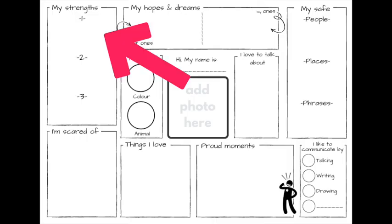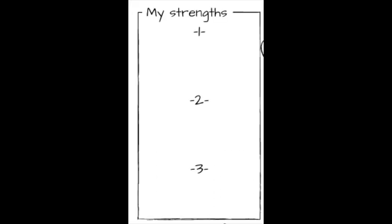Top left, and very importantly, we are listing our child's strengths. This is a child who may have been brought to you because they have got particular challenges, issues, diagnoses, or labels. We want to forget about those for a moment and zone in on the child's strengths — we want them to be the key focus, so let's write them large.